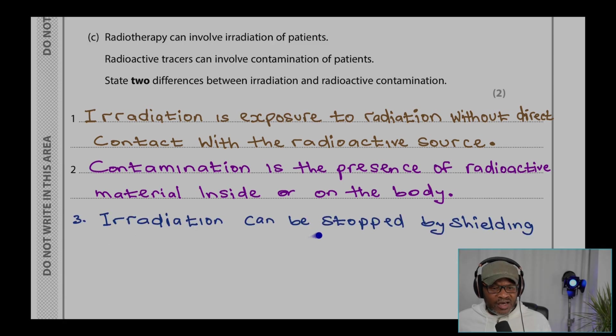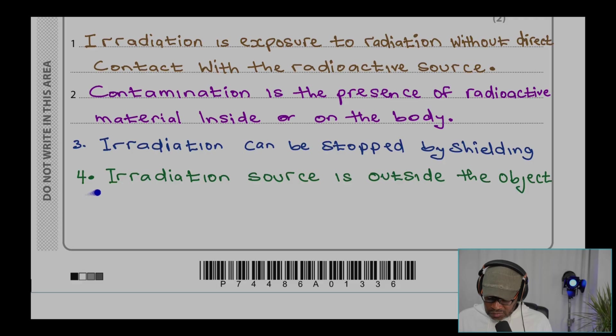So irradiation can be stopped by shielding. Irradiation source is outside the object. Irradiation stops when the source is removed.